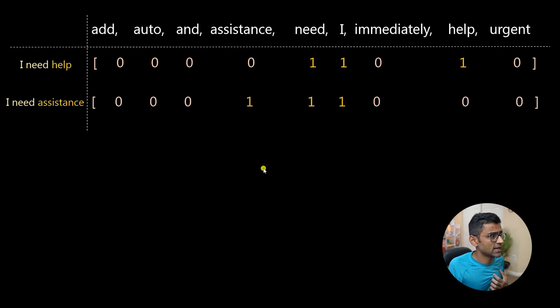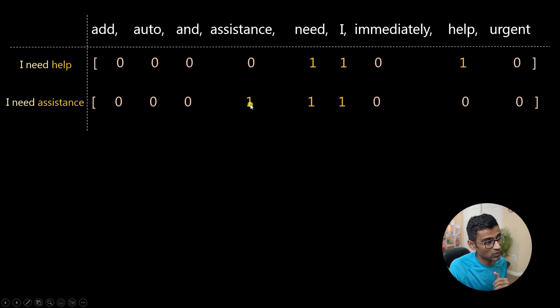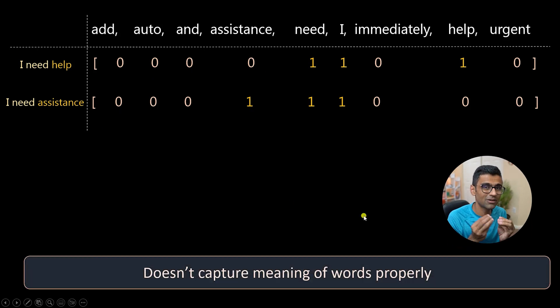The other problem we saw was that if you have two words like 'I need help' and 'I need assistance' - these are similar sentences and you expect that their vector representation should be similar. But since TF-IDF and bag of words are count based methods, the vector representation might not be similar. Here you can see there is one here, zero here, one here, zero here. So these techniques do not capture the meaning of the words properly. You expect that if you have two sentences which are similar, their vectors will be very similar.